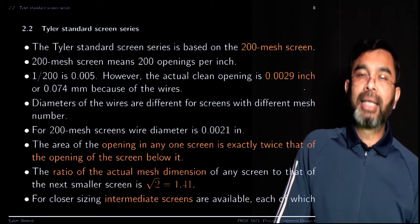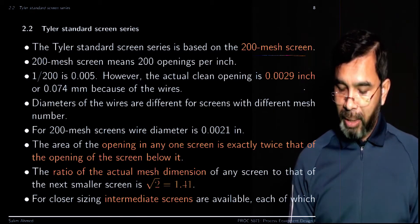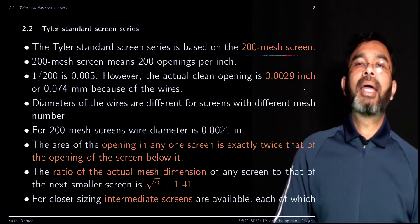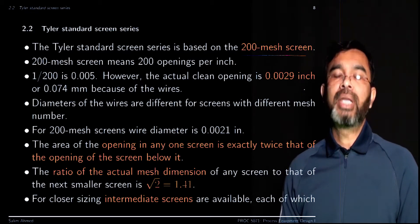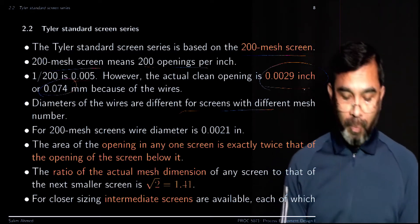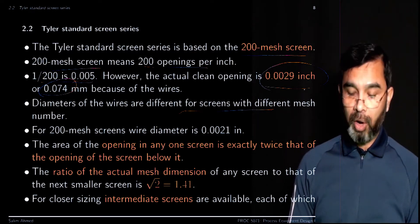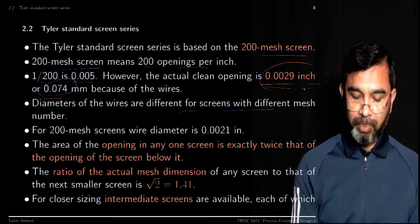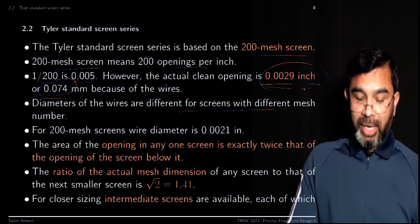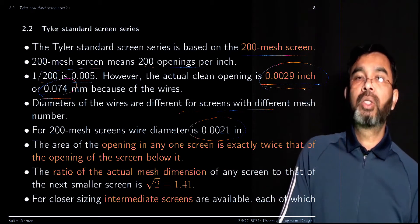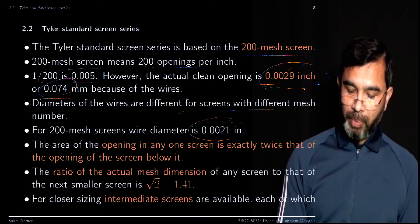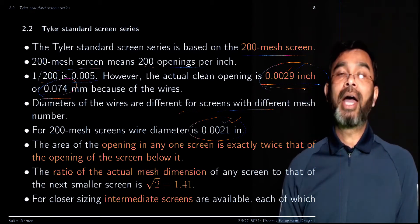The Tyler standard series is based on the 200 mesh screen, which is taken as the base, and the other screens are derived from it. A 200 mesh screen means 200 openings per inch, so 1/200 equals 0.005 inch. However, because there are wires, the actual opening is 0.0029 inch or 0.074 millimeter. For this 200 mesh screen, the wire diameter is 0.0021 inch.